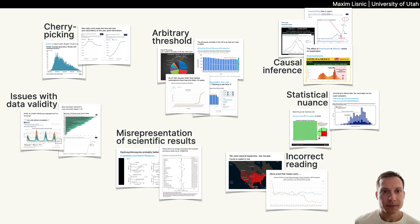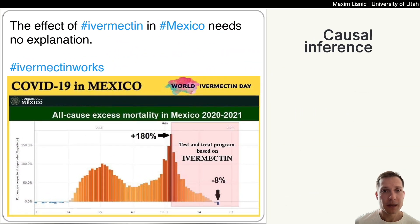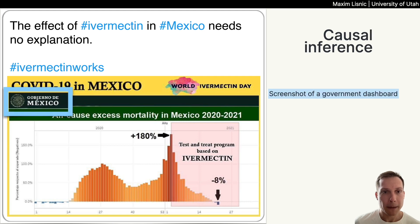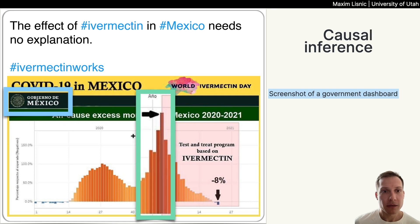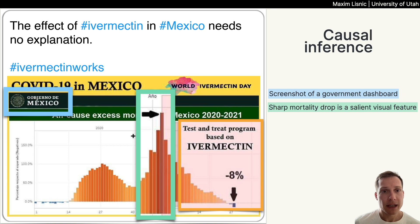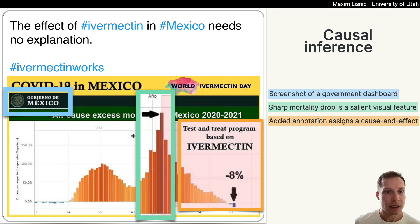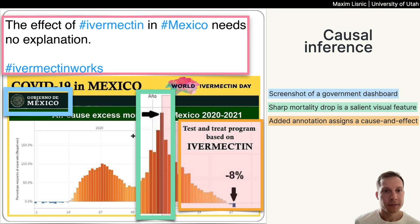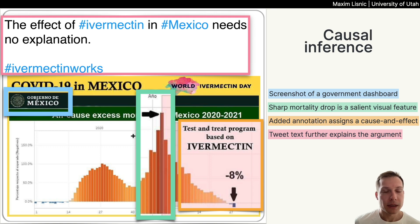Let's go through a couple of examples. In this post, the author shares a screenshot of Mexico's government dashboard of excess mortality. There's a very visually salient feature — a sharp drop in mortality. The author adds an annotation that assigns a cause-and-effect relationship between the introduction of the alternative drug ivermectin and the drop in mortality, and the tweet text further explains this argument. The proposition that ivermectin helps with COVID — which scientific consensus has disproven — is supported through incorrect causal inference with the help of cherry picking.